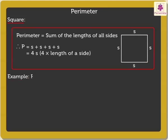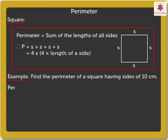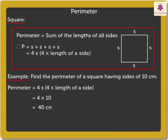Now, let's find the perimeter of a square having sides of 10 centimeters. Using the formula, perimeter of the square is equal to 4 into 10, which is equal to 40 centimeters. Thus, perimeter of the square is 40 centimeters.